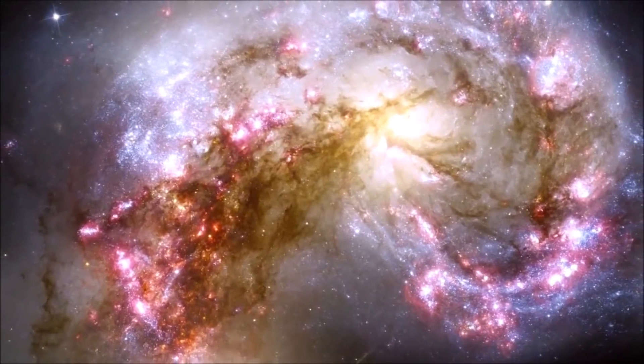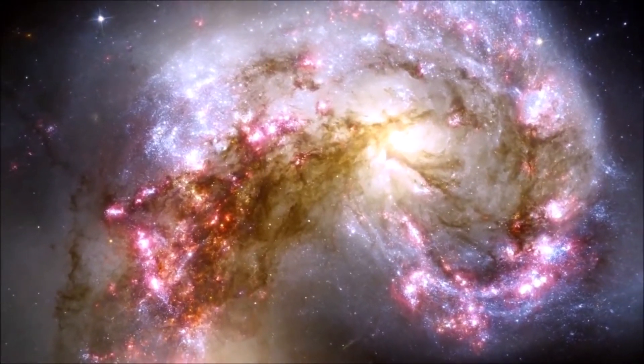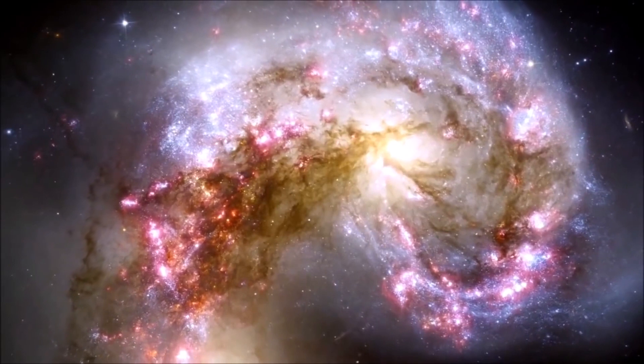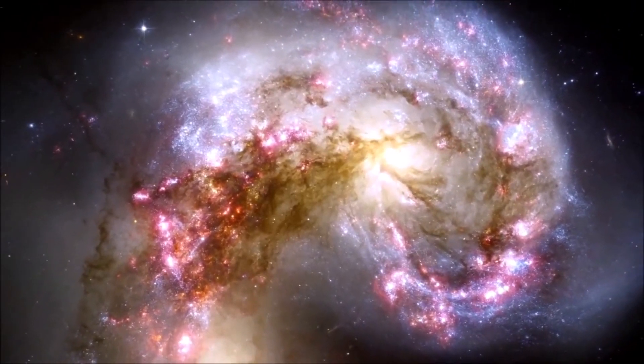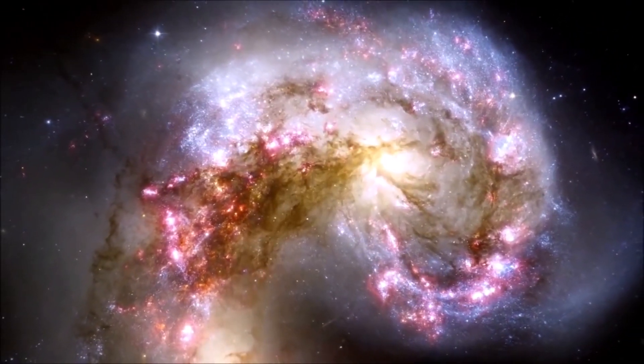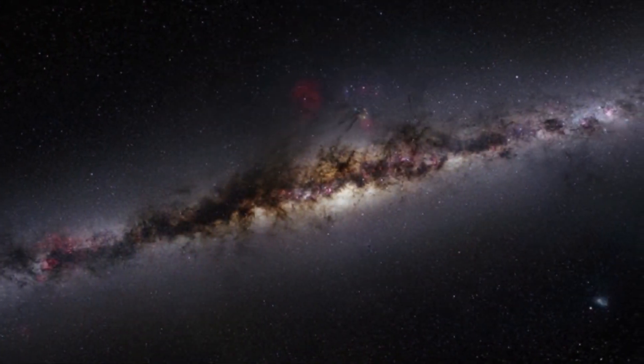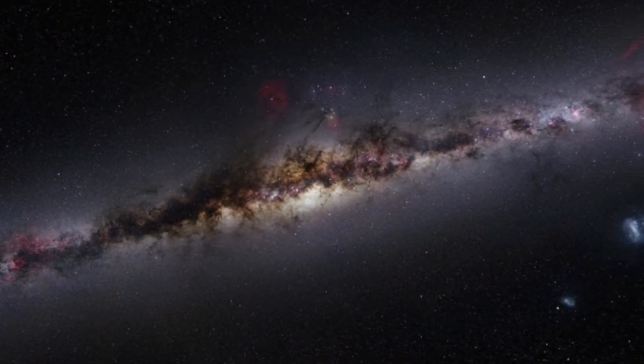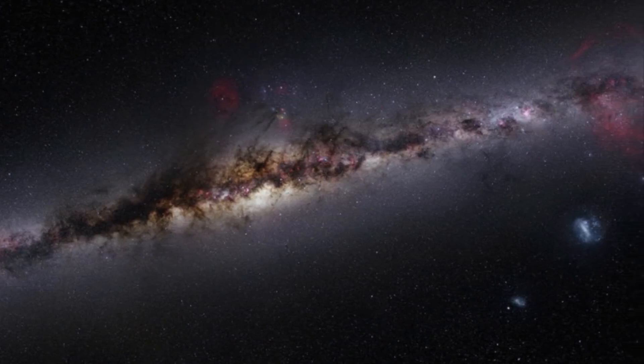We searched all the early data for galaxies with this very striking signature, and these were the two systems that had by far the most compelling signature, said Mr. Naidoo. One of these is Glass Z13, while the other, not as ancient, is Glass Z11.